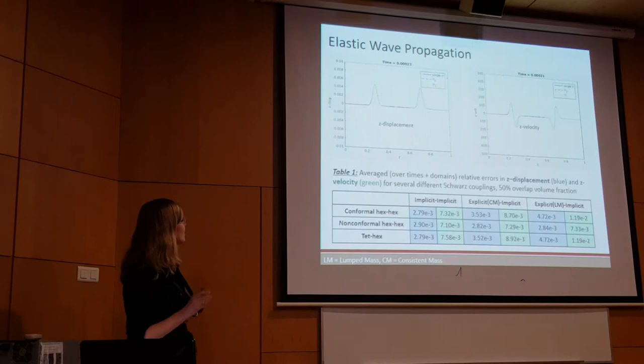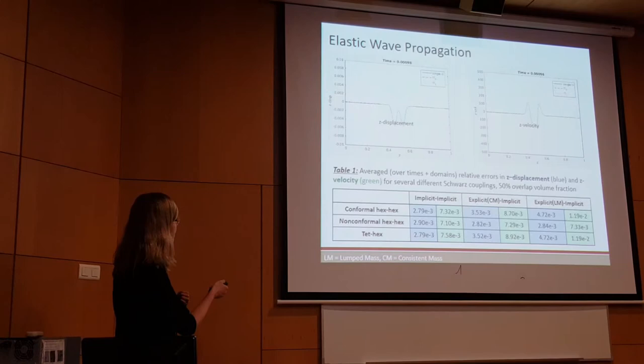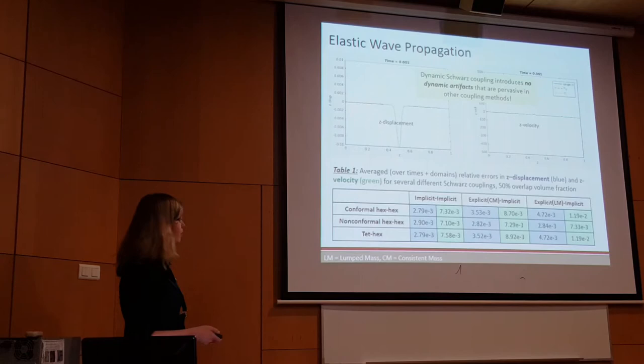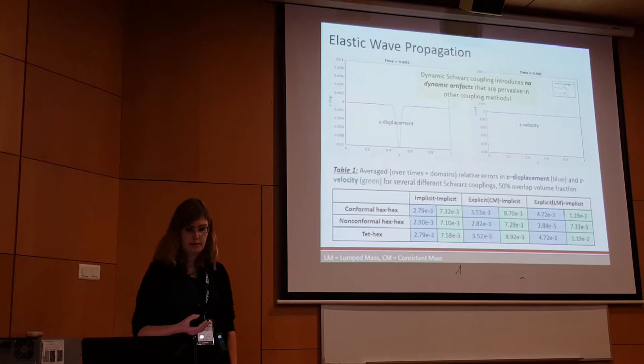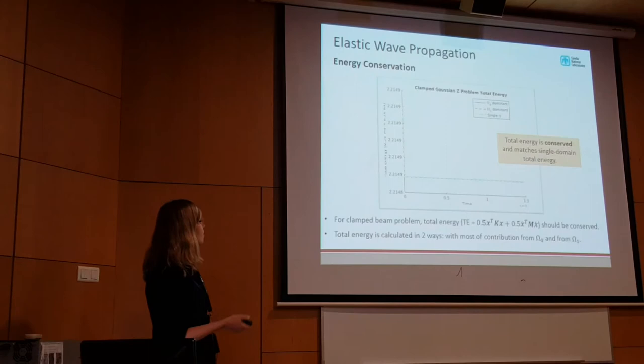These movies show the solution for tet-hex coupling with two subdomains shown in green and red — Z-displacement on the left, Z-velocity on the right, and the single-domain solution in blue. The main point is you don't see any artifacts that would be pervasive in other coupling methods. We can quantify this by computing errors with respect to the exact solution, and these errors are comparable to what you would have for a single-domain discretization of comparable resolution. For this problem, total energy should be conserved, and indeed we get energy conservation with the Schwartz method.